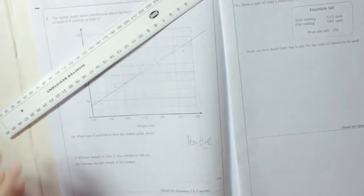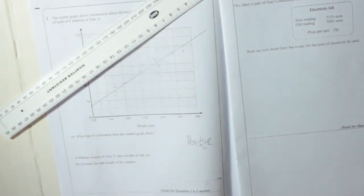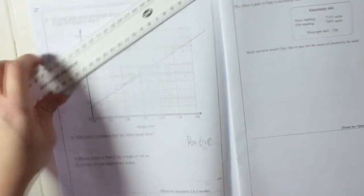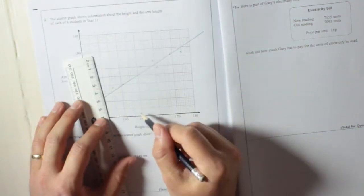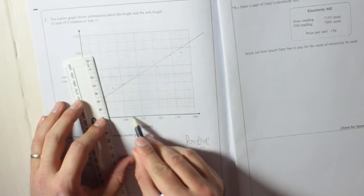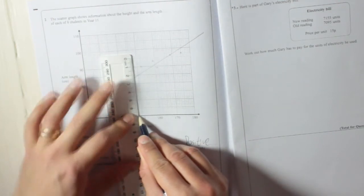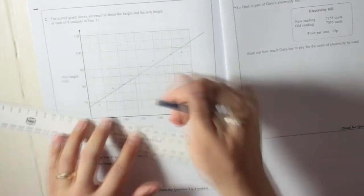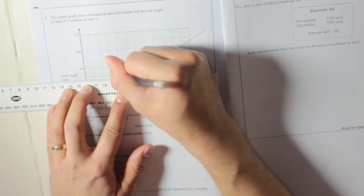So there's my line of best fit. And if a different student has a height of 148cm, it means you need to go up from 148cm. And they go up in ones, so there it is. To the line, and then left.